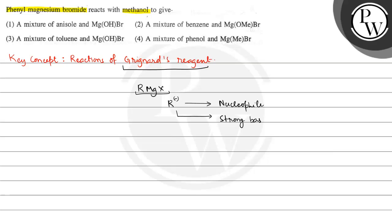When the reacting material has any compound with active hydrogen — like OH, NH₂, COOH, or any other active hydrogen-containing species — the R⁻ ion accepts that proton. So this shows an acid-base reaction with species having active hydrogen.